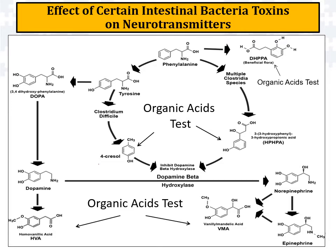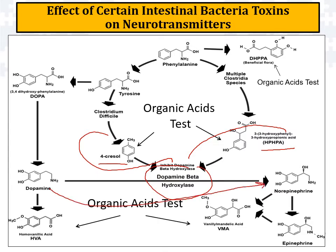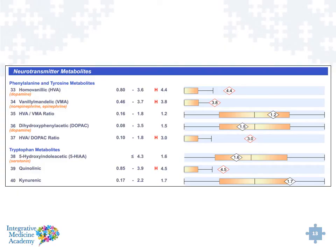The organic acid test picks up on things like 4-cresol and HPHPA. These particular toxins can inhibit an enzyme called dopamine beta-hydroxylase, which is what converts dopamine to norepinephrine. This can also cause increased levels of dopamine that are measurable on the OAT by looking at the HVA marker — homovanillic acid. So dopamine beta-hydroxylase gets inhibited by these Clostridia toxins. You may also see quinolinic acid elevated; quinolinic acid is actually a neurotoxin — an excitatory chemical in the brain often triggered in the presence of chronic infection — causing imbalances in neurochemistry.